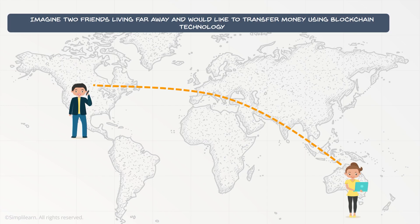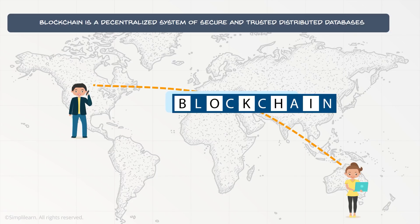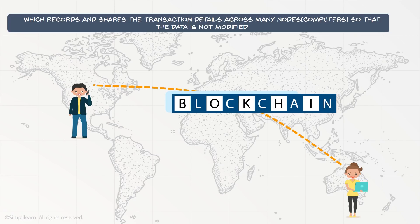Now, what is blockchain? Imagine two friends living far away who would like to transfer money using blockchain technology. Blockchain is a decentralized system of secure and trusted distributed databases. It's a distributed ledger which records and shares transaction details across many nodes which are part of the network, so that the data is not modified.